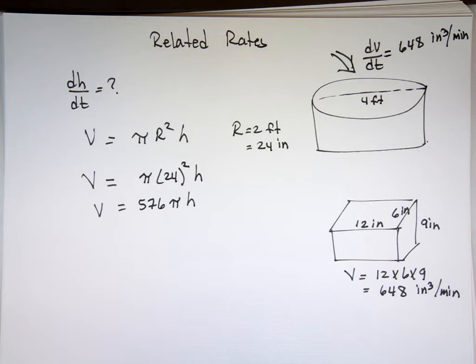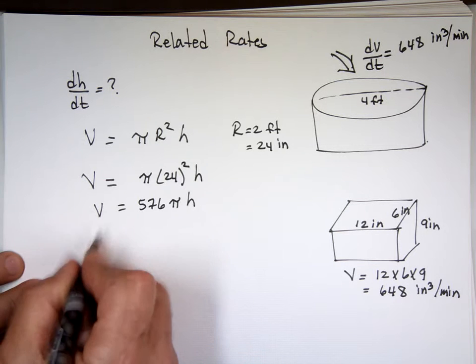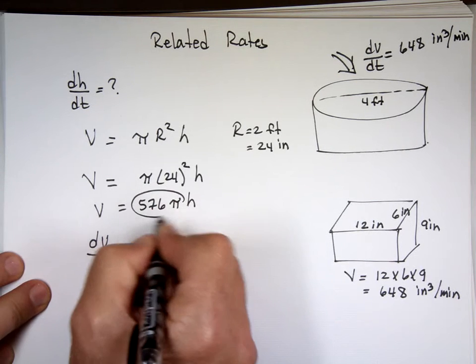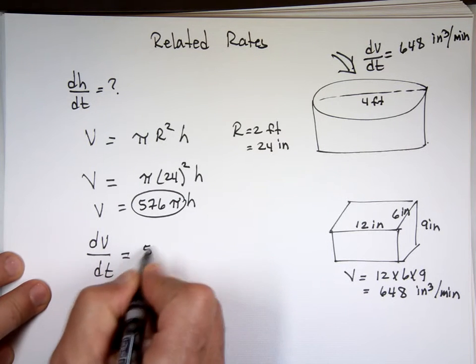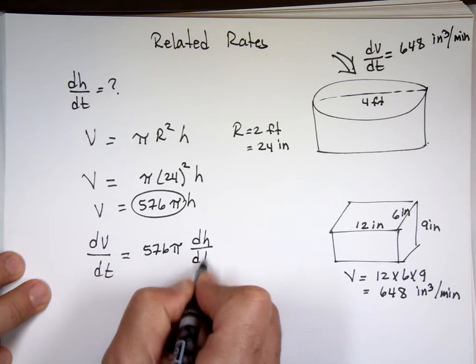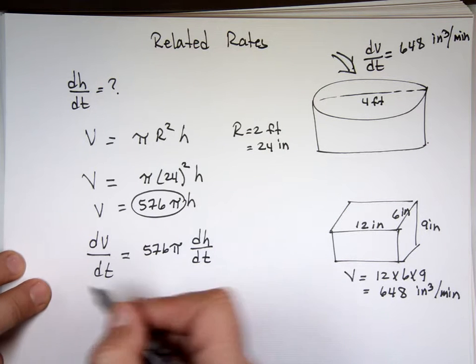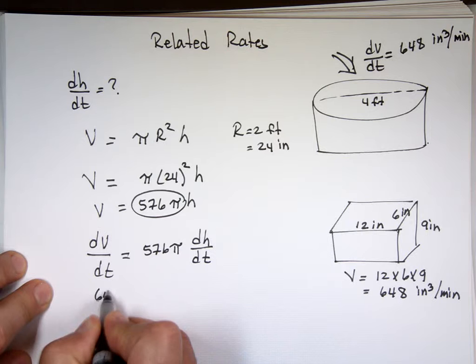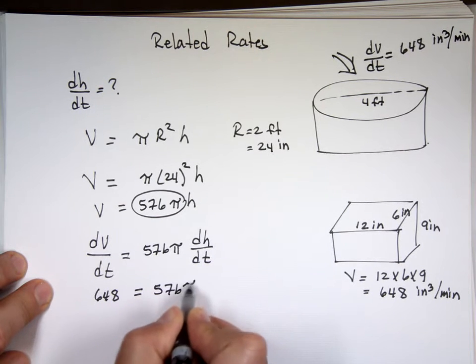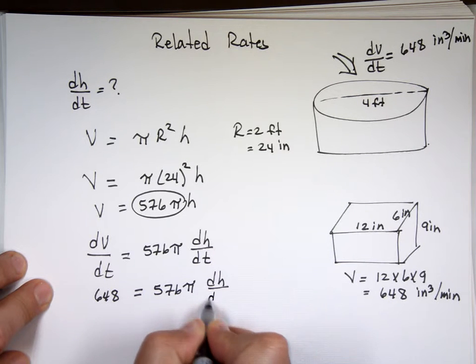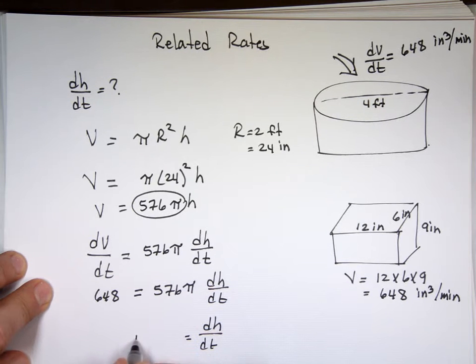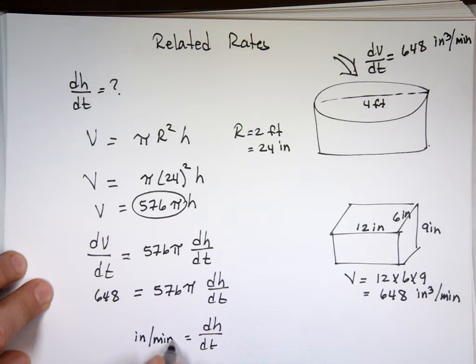Now take the derivative with respect to t. dv dt. The derivative with respect to t, dv dt. Again, this is a constant, stays in the front. The derivative h, dh dt. Plug in the numbers, we know dv dt is 648. Equals 576 pi times dh dt. And we can find how quickly the height is changing.